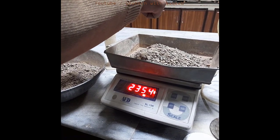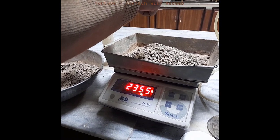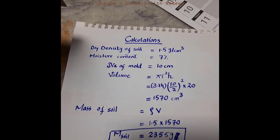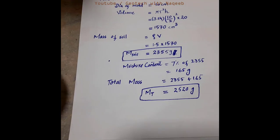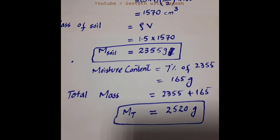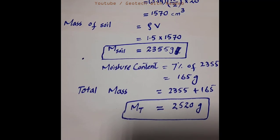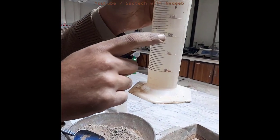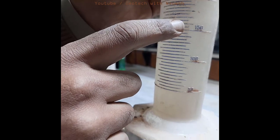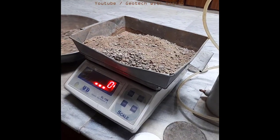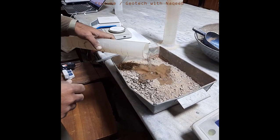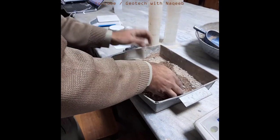We have 2355 grams of soil sample. Now we need to prepare a remolded sample, and we'll have to add some moisture content. The moisture content is 7%, so we calculate 7% of 2355 grams, which comes out to be 165 grams. Since 1 ml ≈ 1 gram, we need approximately 165 ml of water. We'll now add this water into the soil and mix it to prepare the remolded soil sample.